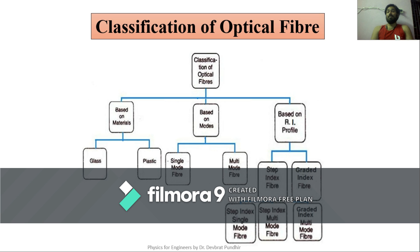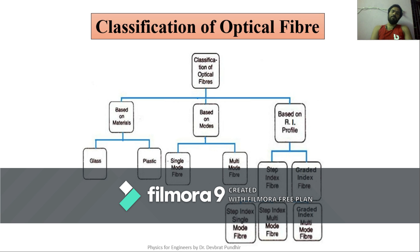Based on material, there are two types: glass and plastic. Based on mode, there are single mode fiber and multimode fiber. Based on refractive index, there are two types: step index fiber and graded index fiber — also known as GRI or graded index fiber. Step index fiber is further divided into step index single mode and step index multimode. Graded index fiber has a graded index multimode type; graded index single mode fiber is not possible.